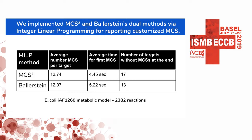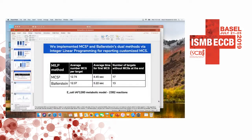How scalable is your method for large-scale models? These methods have about 100 to 200 reactions for full enumeration, and sometimes we can produce minimal cut sets for metabolic networks with 300 or 400 reactions. For customized minimal cut sets, we can go up to 2,000 or 3,000 reactions, since we are looking for certain minimal cut sets and can run the methods on large-scale metabolic networks.